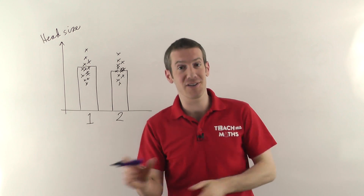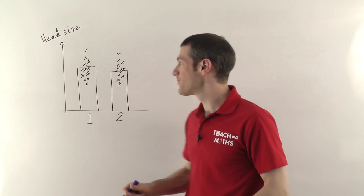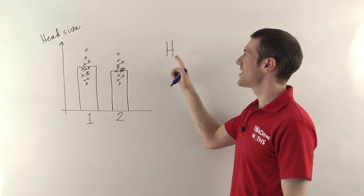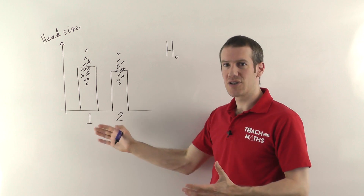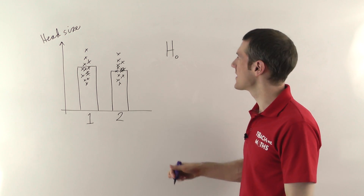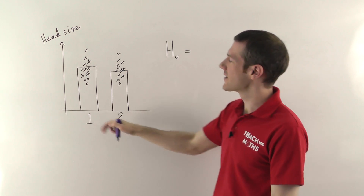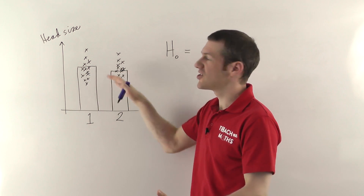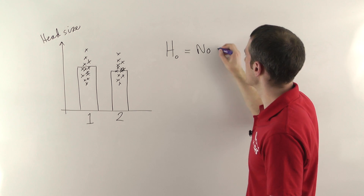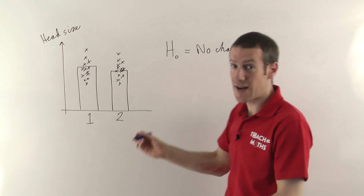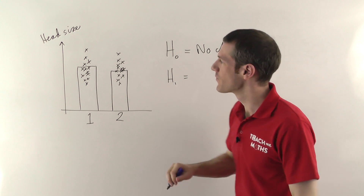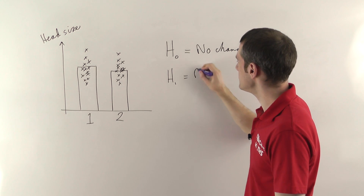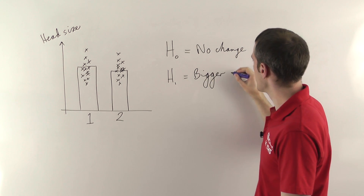I'm going to assume you're familiar with the general concepts of hypothesis testing, but just to remind you: you always have some null hypothesis, which we tend to call H-naught, and that means there's no change, no connection, or what you were trying to achieve didn't make a difference. So in this case, H-naught would be that the new process of making the beer didn't give you any change in the head size — no change. Then you always have the alternative hypothesis, which is what you're trying to prove: that there is a change, that the new process gives you a bigger head size.